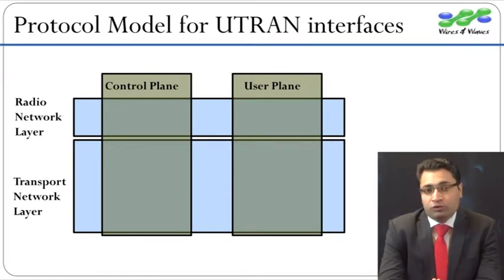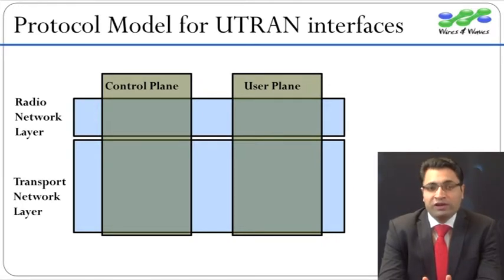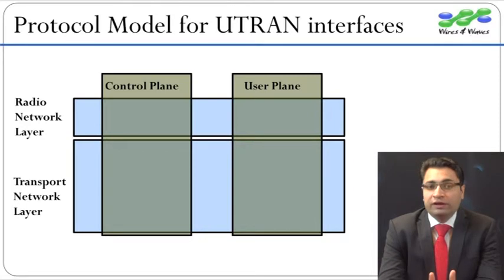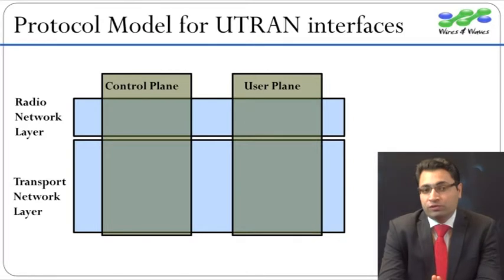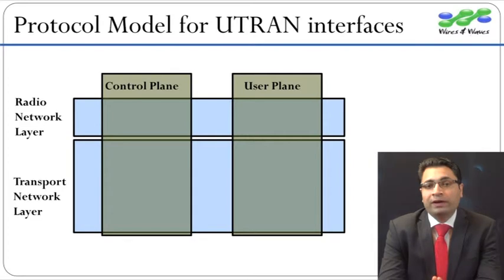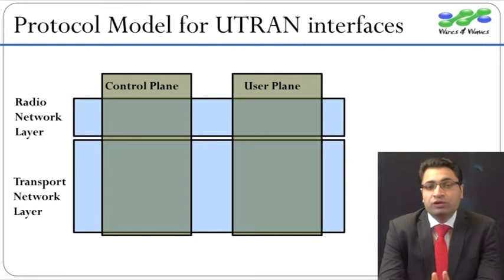User plane protocols define the frame structure for transmission of user plane traffic on various UTRAN interfaces. Horizontally, this picture is divided into two main layers: radio network layer and transport network layer. All UTRAN specific functions are described by the radio network layer, and the transport network layer only describes the transport technology.